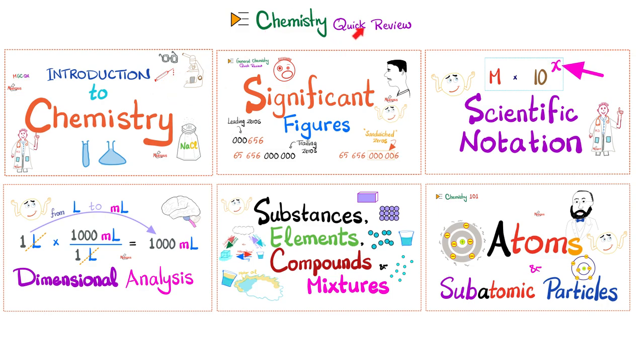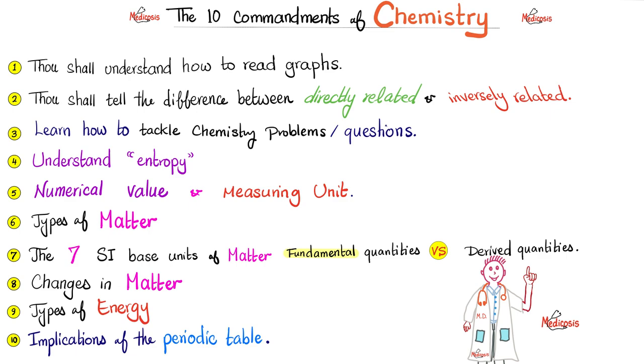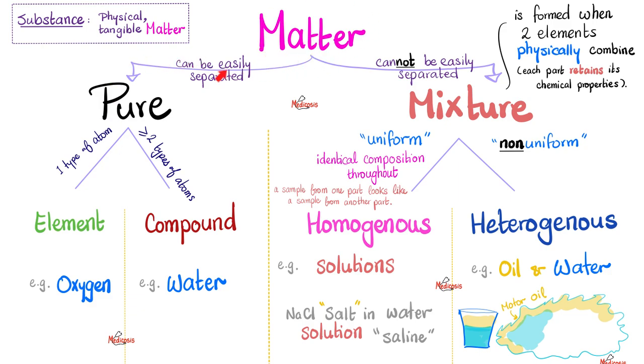Please watch the videos in this chemistry quick review playlist in order. In video number one we talked about the 10 commandments of chemistry. It was all about energy and matter. Matter could be pure or a mixture. The pure matter, if it's made of one type of atom, is called element, such as oxygen. But if it has two or more types of atom, that's a compound, such as water. It has two hydrogen atoms and one oxygen atom.